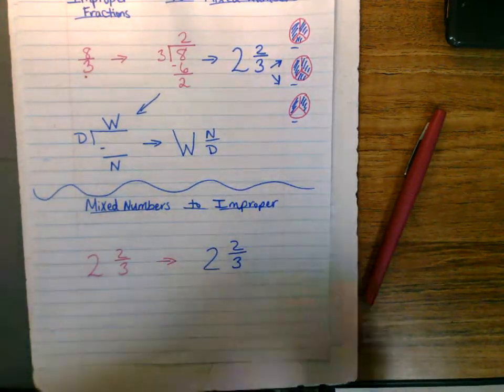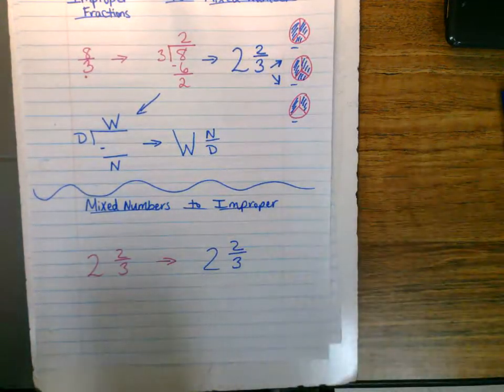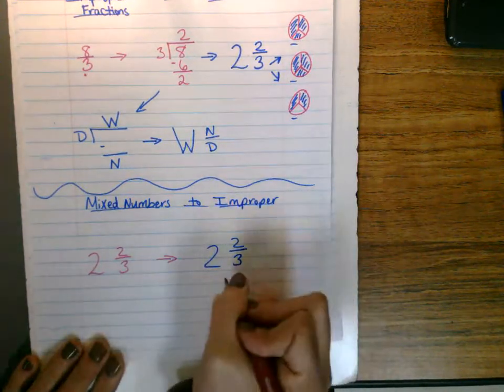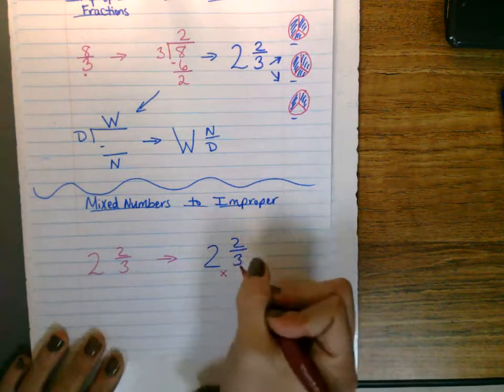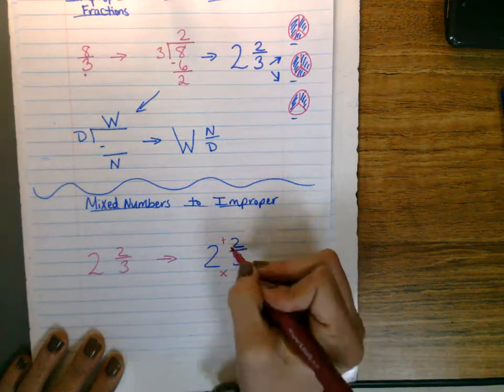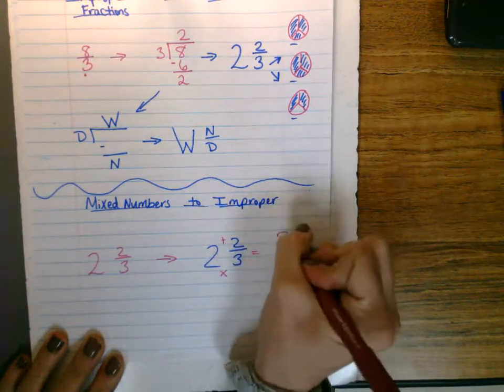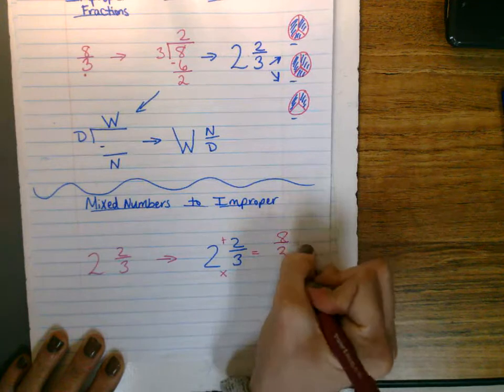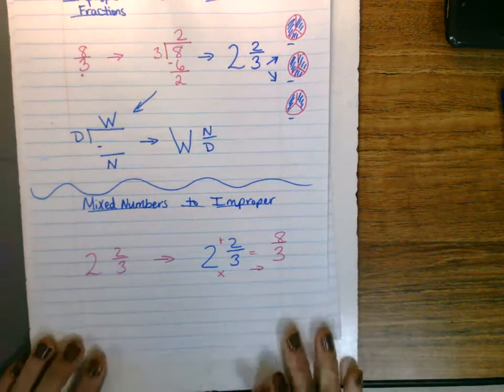And so we will multiply three times two, which is six, and then we'll add two, six, seven, eight. And you just slide the denominator over, so eight-thirds.